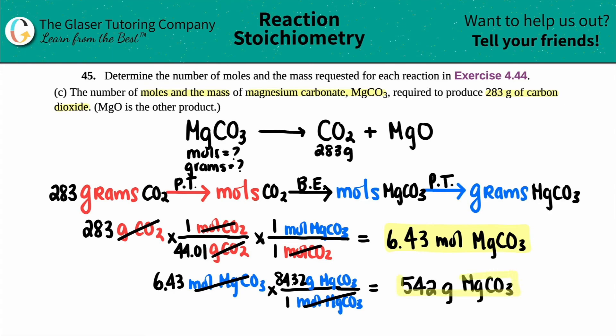Those are my two numbers. Remember, these two answers are equivalent—they are just in different units. This is just a unit for quantity, this is how many grams there are, but their numbers are the same, just different units. Now to put this into perspective, we just found out how many grams it would take for magnesium carbonate to produce 283 grams of carbon dioxide. So if I wanted to produce 283 grams of carbon dioxide, I need to put in 542 grams of magnesium carbonate.